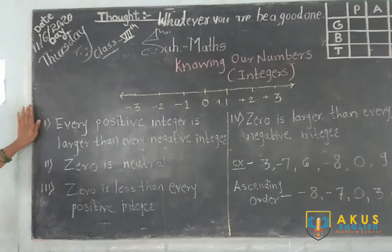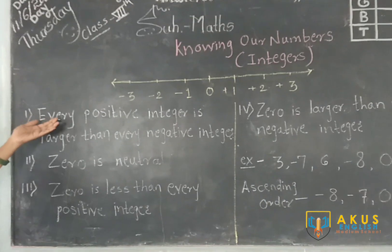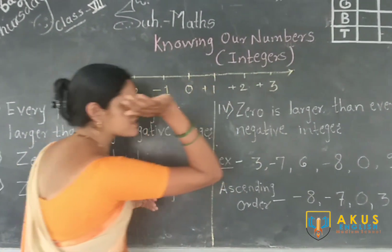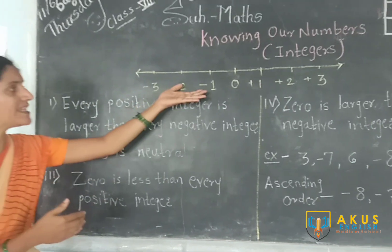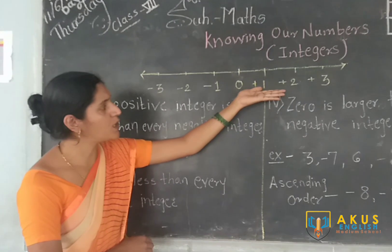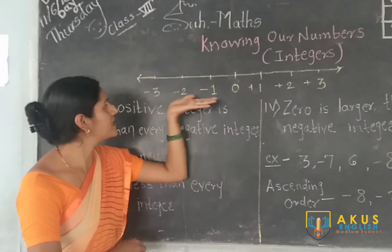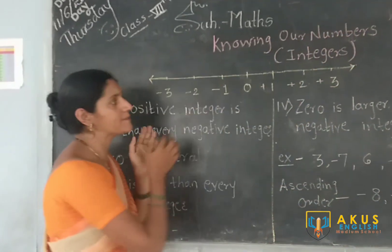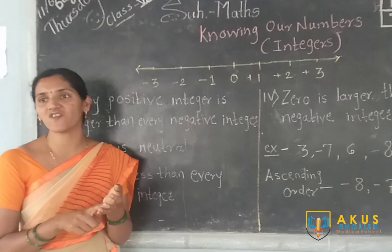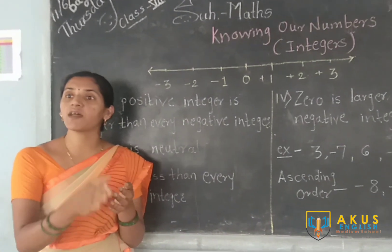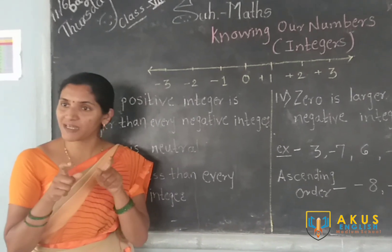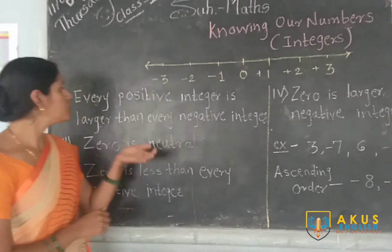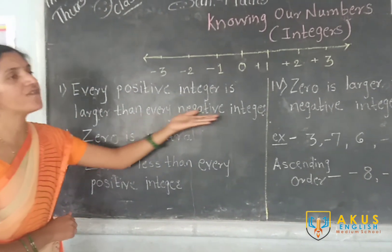The first property for any kind of integer is that every positive integer is larger than every negative integer. Whatever positive integers are there, their value is always greater than any negative integer. For example, 1 is greater than minus 1, minus 2, minus 3, and so on. Even plus 1 is always greater than minus 100. Note that 100 is a large number, but when we put a minus sign before it, its value becomes less than any positive integer.